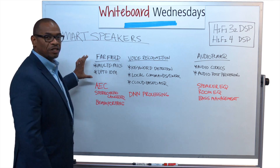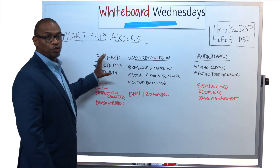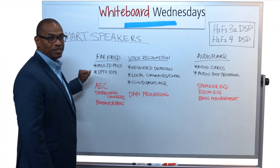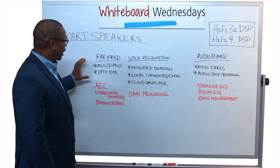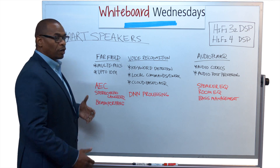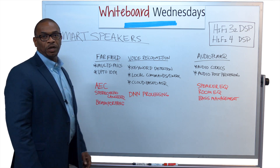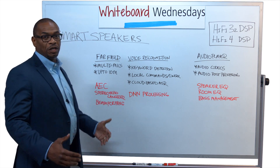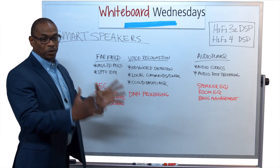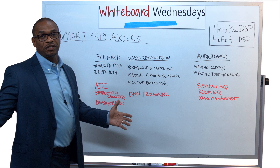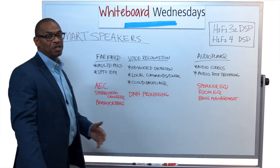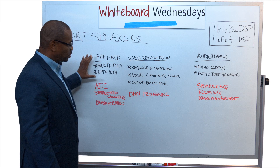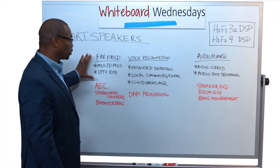Far field processing usually involves multiple mics. In today's systems, this can be between two and seven microphones being used. A competitive smart speaker must work from up to a 10 meter distance, meaning the speaker itself and the person engaging with the speaker can have up to a 10 meter distance. There are a lot of processing techniques going on inside of the far field processing.